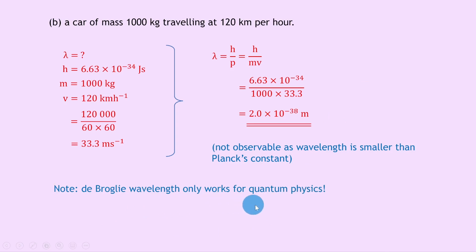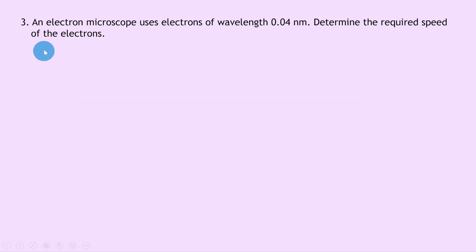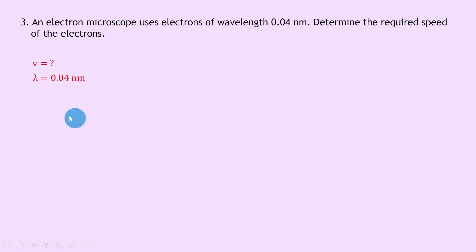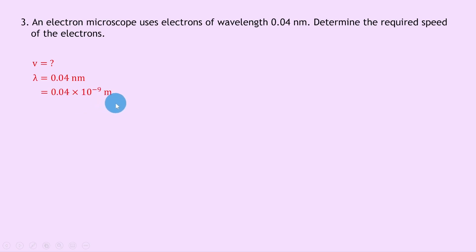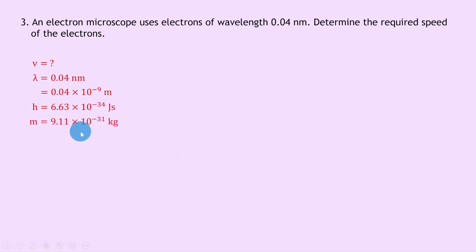Question three says an electron microscope uses electrons of wavelength 0.04 nanometers. To determine the required speed of the electrons, we write down what we know: we're trying to find speed v. Lambda equals 0.04 nanometers, which is 0.04 times 10 to the minus 9 meters. Planck's constant h is 6.63 times 10 to the minus 34 joule seconds, and mass is 9.11 times 10 to the minus 31 kilograms for the electron.